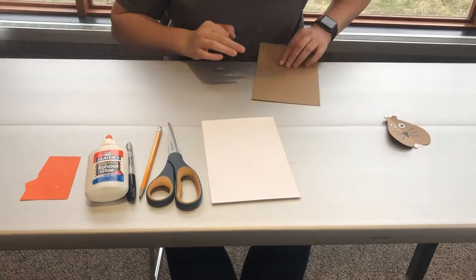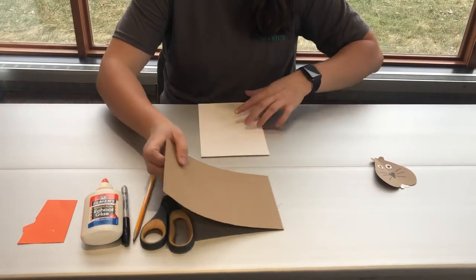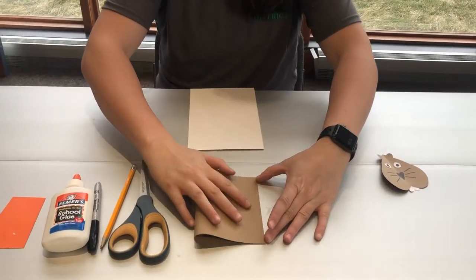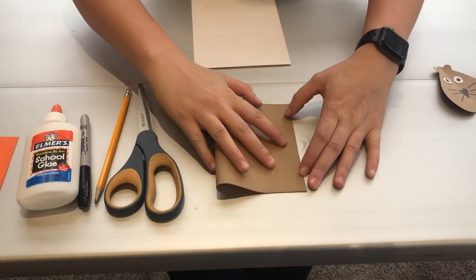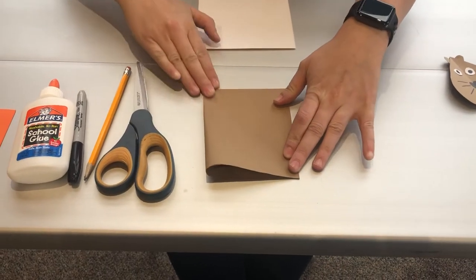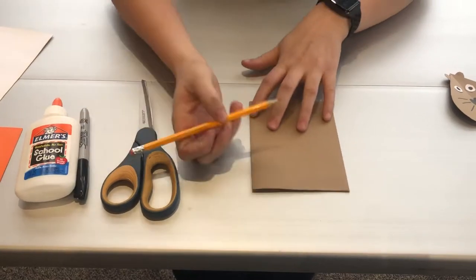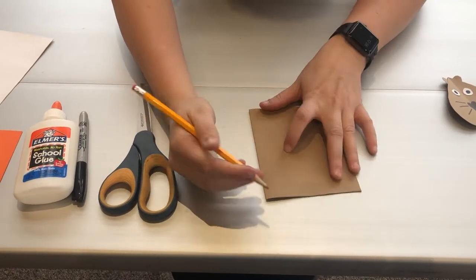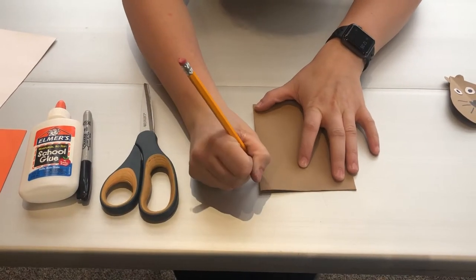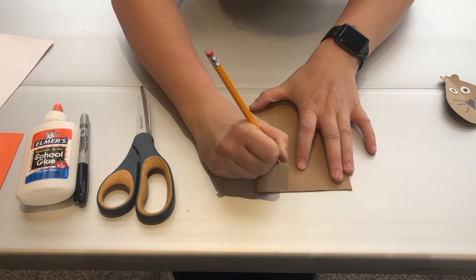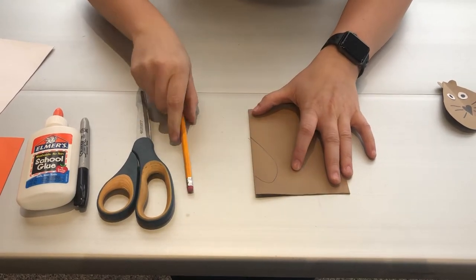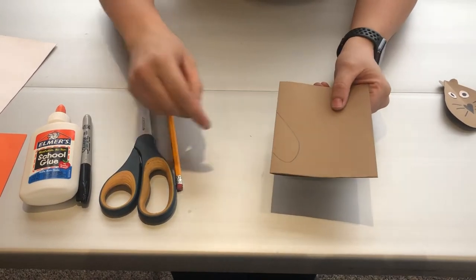What I did first was take the brown piece and fold it in half, as close to half as you can get. Then along the crease side you draw half of a hole, and then you leave it folded and cut it out like this.